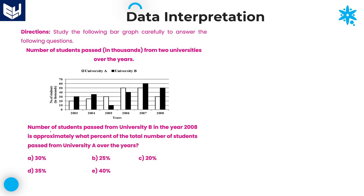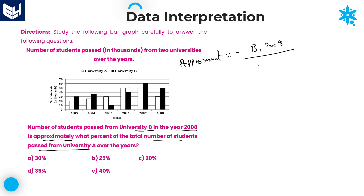Next question: the number of students passed from University B in the year 2008 is approximately what percent of the total number of students passed from University A over all the years? We need to calculate the approximate percentage. The formula is: University B 2008 divided by University A total, multiplied by 100.